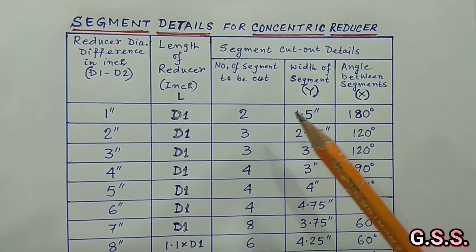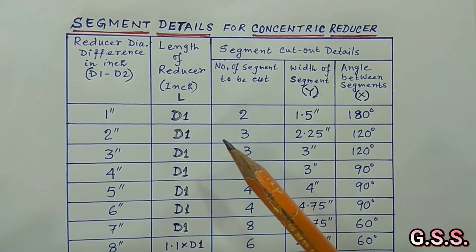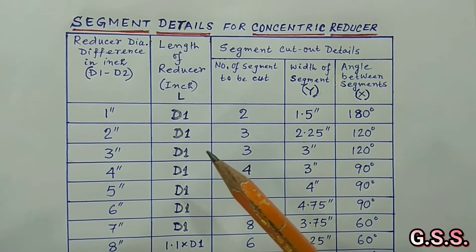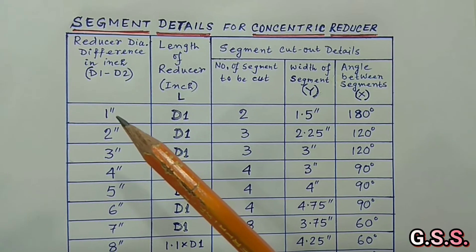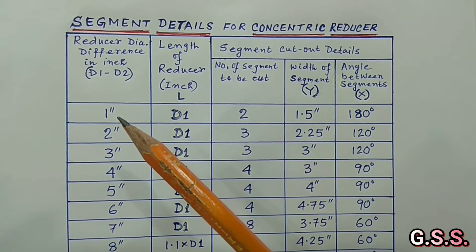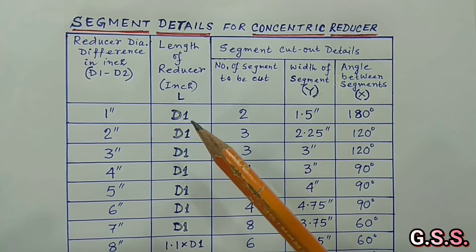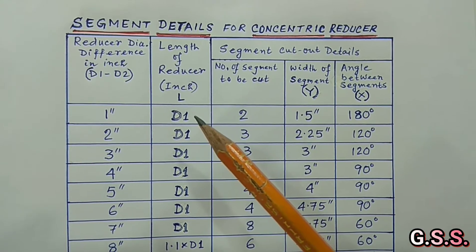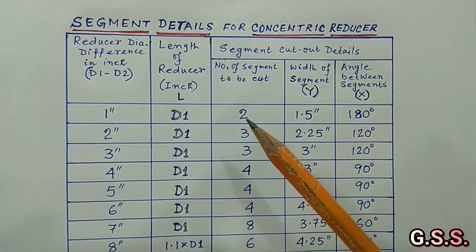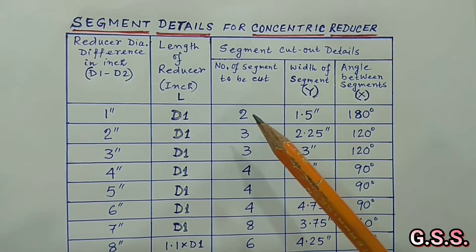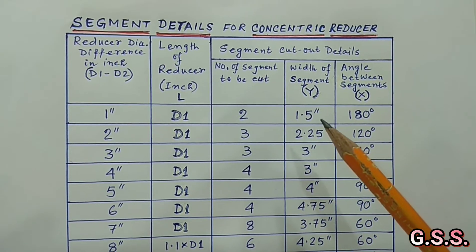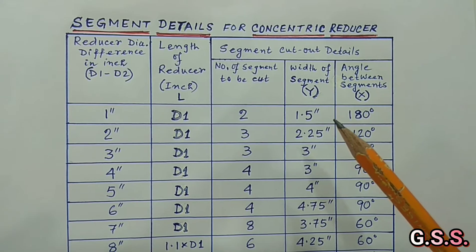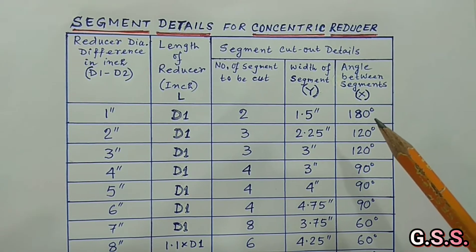For example, if we want to fabricate one 6 inch by 5 inch concentric reducer, the diameter difference is 1 inch. Length of reducer is D1, which is 6 inches. Number of segments will be 2. Width of each segment cut shall be 1.5 inch. And angle between segments is 180 degrees.